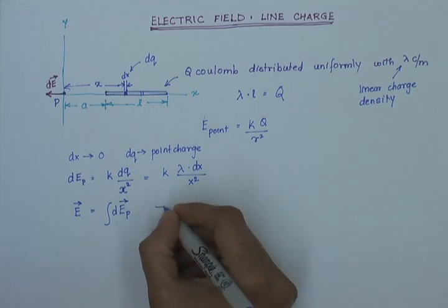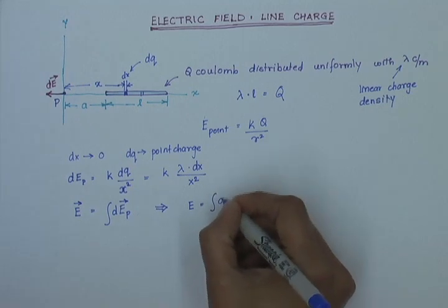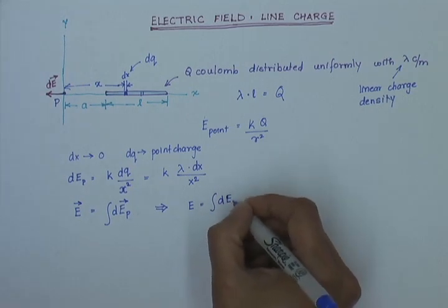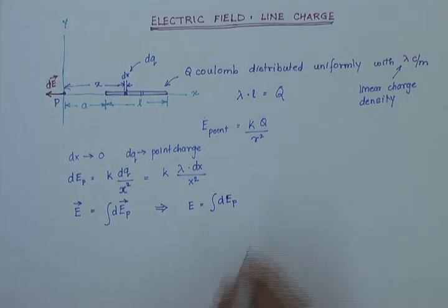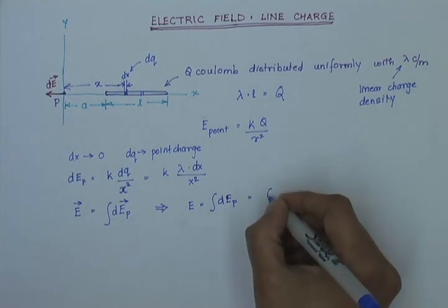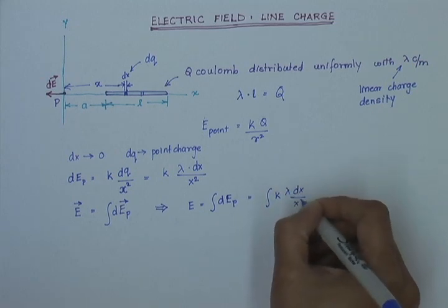...I can express my integral as just the integral of magnitude. And so, I'll write this as dE by removing the vector notation because I have established the direction. And so, that is equal to k lambda dx over x squared.